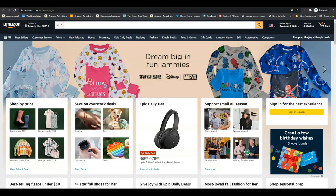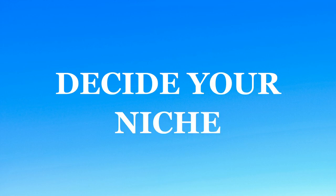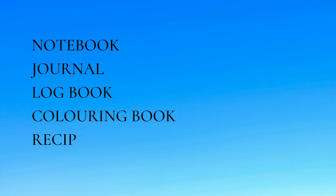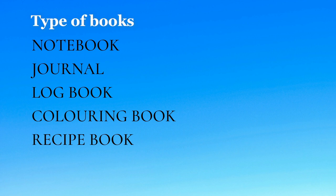The first thing you need to do is decide on a niche. A niche is the type of book that you want to publish. For example, you could publish a notebook, a journal, a log book, a colouring book, a recipe book and so on. It's also a good idea to niche down because if you research notebooks you get so many results it's really not worth it, so you need to narrow it down even further.